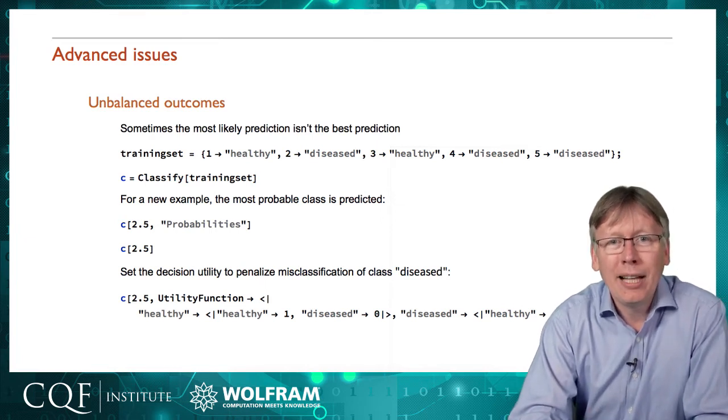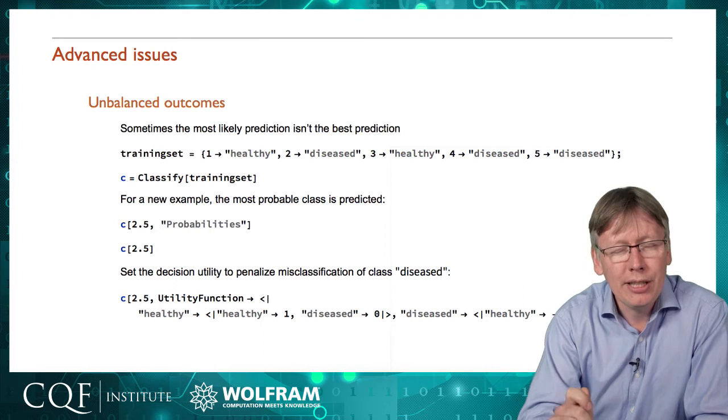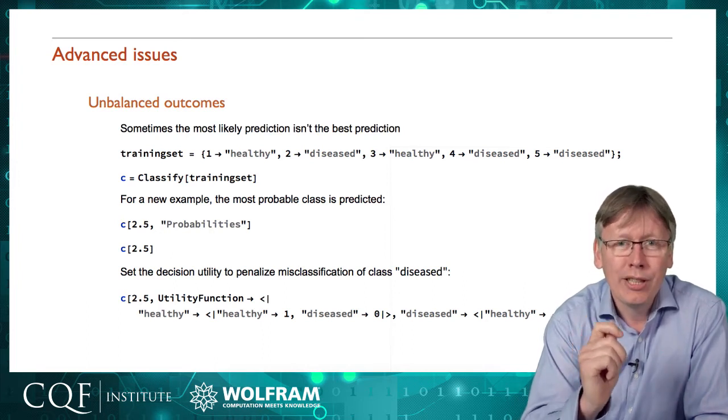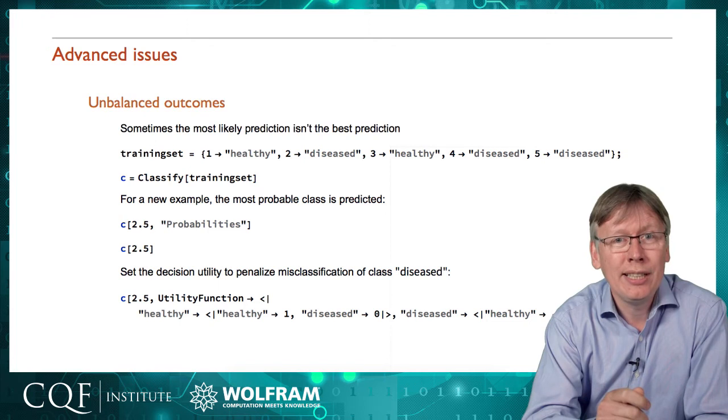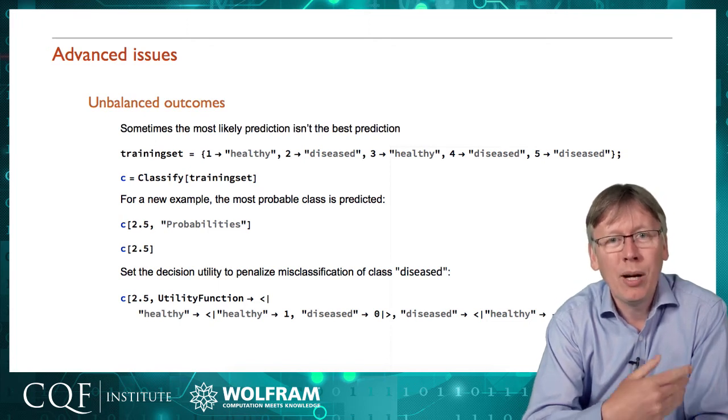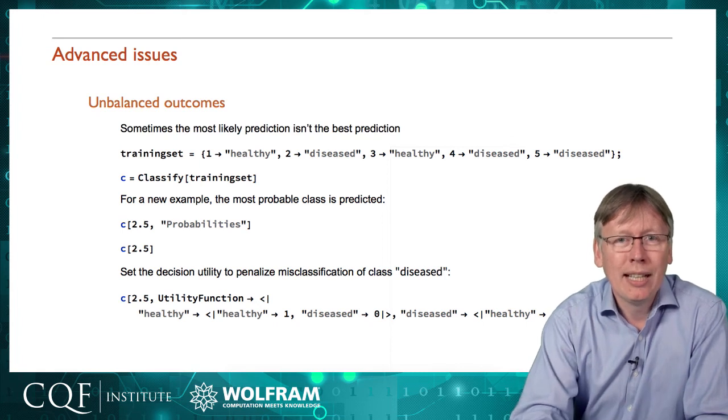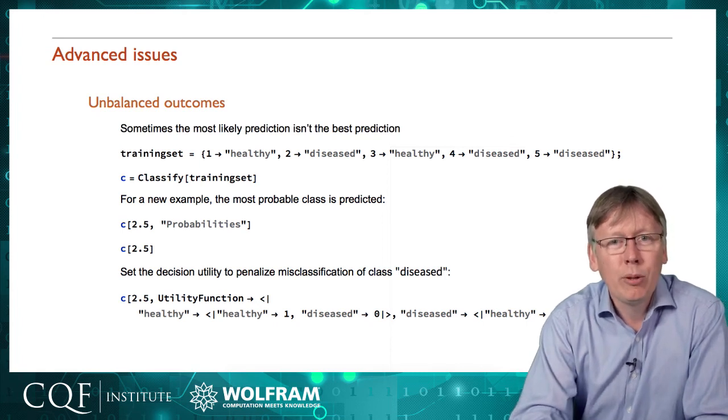So we aren't necessarily asking for the best prediction we're asking for the best decision and because the outcomes are so unbalanced that the risk, the danger of or the outcome rather of predicting that you were healthy when in fact you have the disease is so disastrous compared to making the mistake the other way around of saying you have the disease when you didn't which has no negative consequences we need to adjust the decision making in order to take that into account.